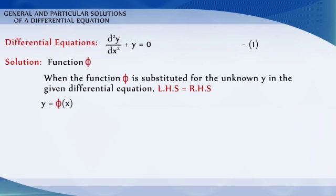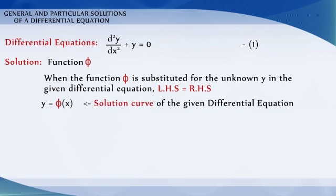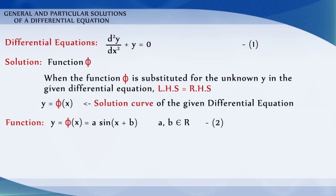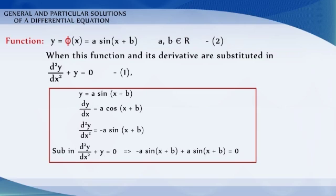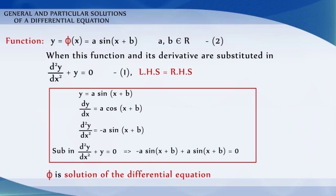The curve y is equal to phi of x is called the solution curve of the given differential equation. Consider the function y is equal to phi of x is equal to a·sin(x + b), where a and b belong to real numbers. When this function and its derivatives are substituted in the equation d squared y by dx squared plus y is equal to 0, the left hand side becomes equal to the right hand side. So it is a solution of the differential equation d squared y by dx squared plus y is equal to 0.